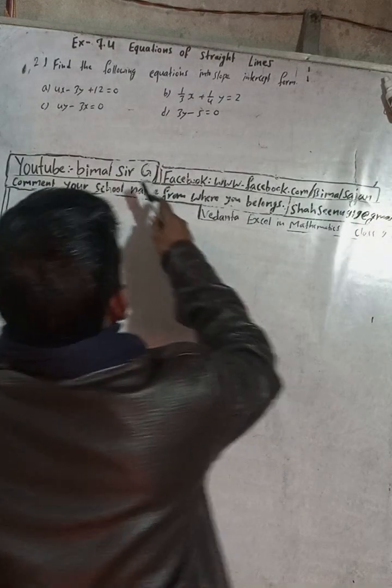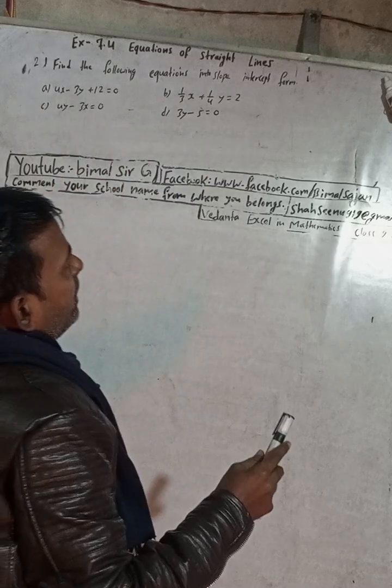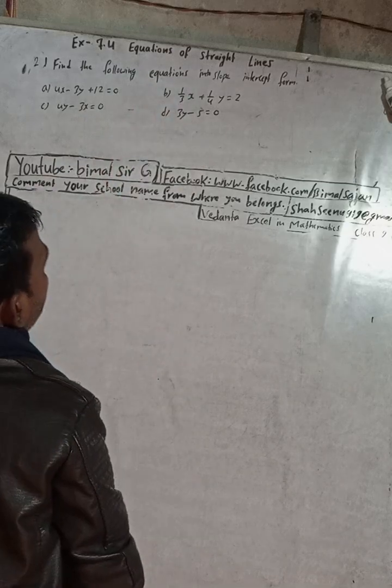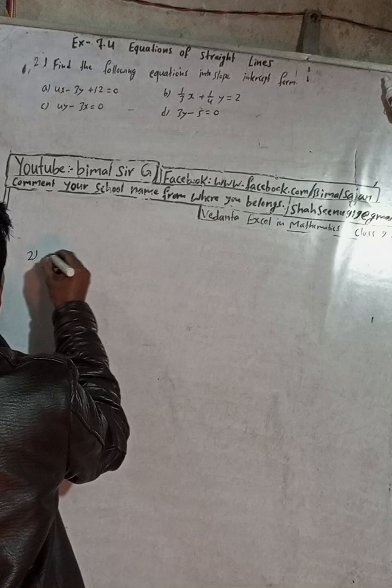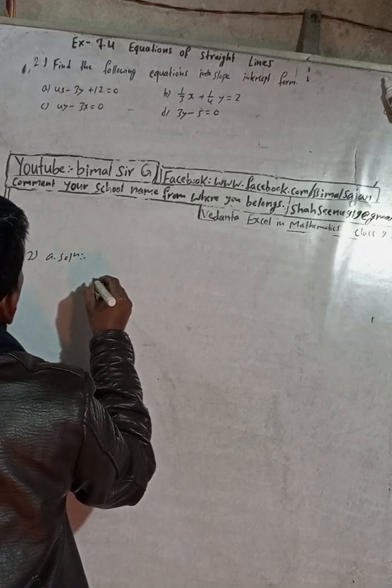And don't forget to check the playlist - Vimal Sarji playlist contains many solutions. Now the question is: find the following equations in slope-intercept form. Number 2a solution is here.